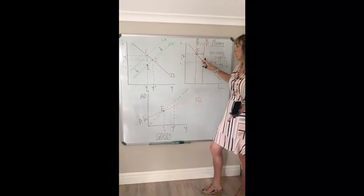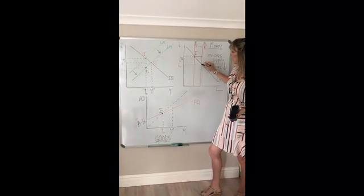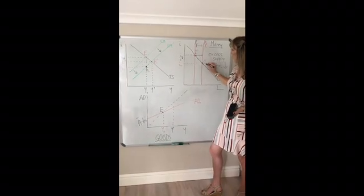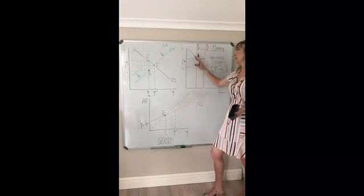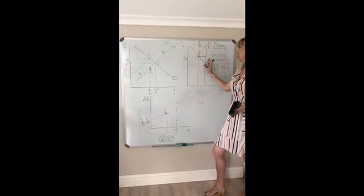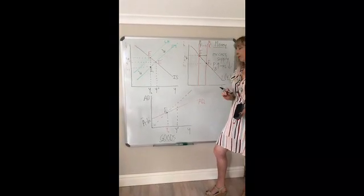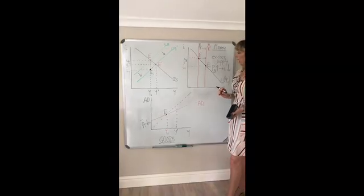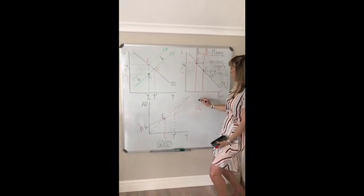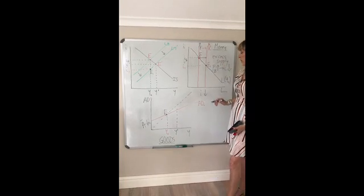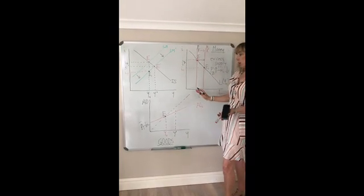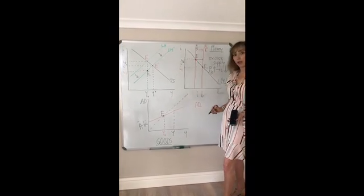So a lower interest rate induces people to be prepared to hold more liquidity, more cash, because there's a lower opportunity cost of doing so. So we move along the money demand curve until we get to a new equilibrium, we'll call that E1, where once again your money market is in equilibrium, money demand equals the new increased money supply. In the process we see that interest rates have fallen.